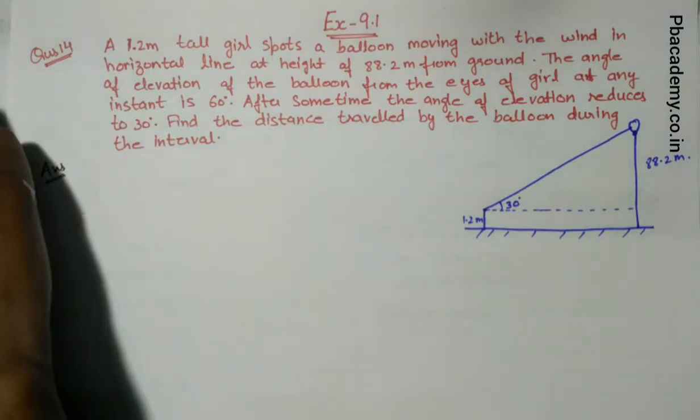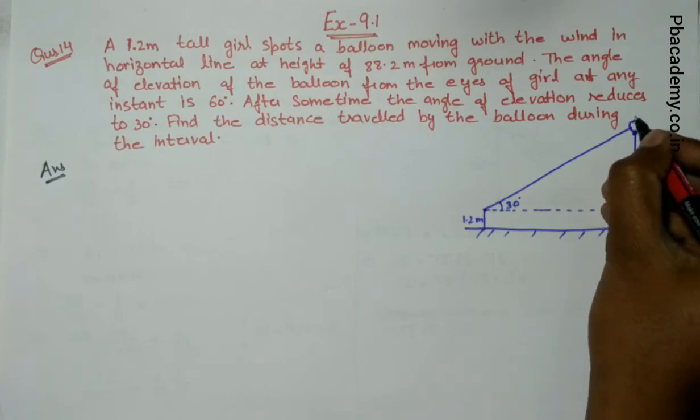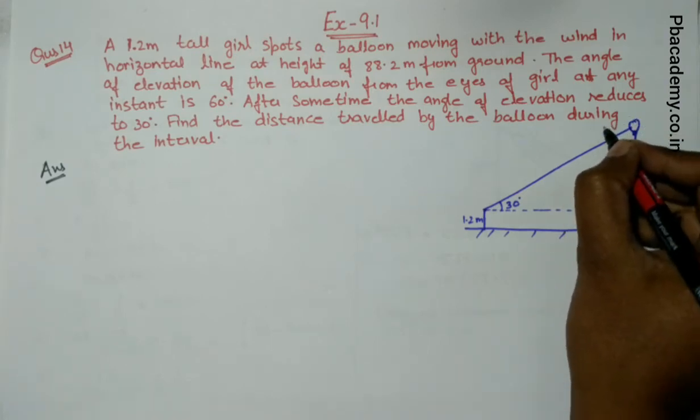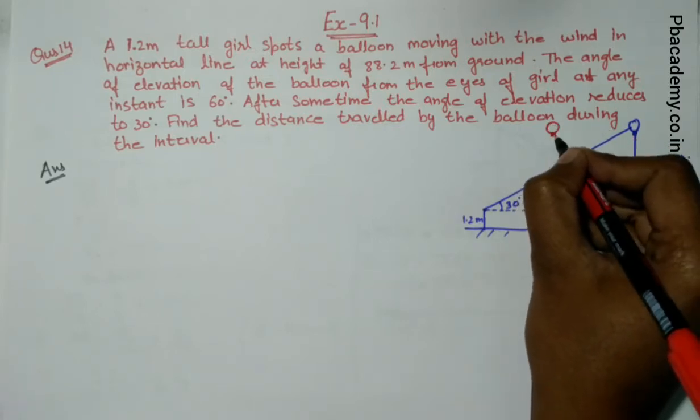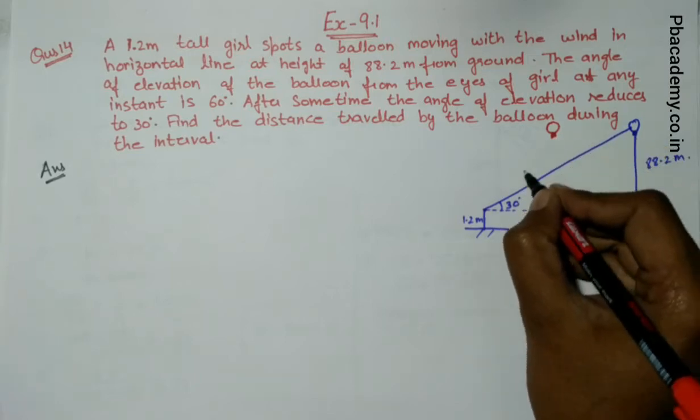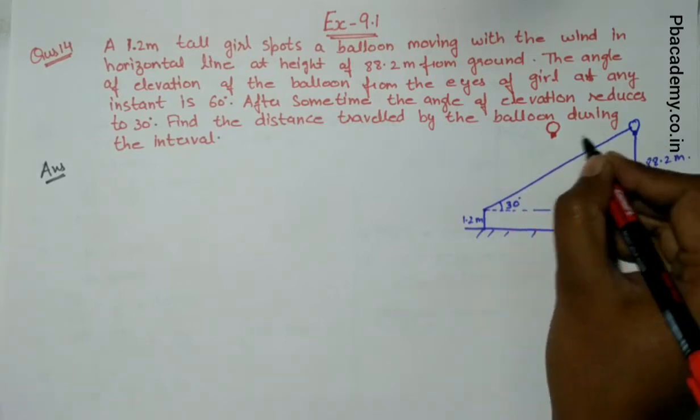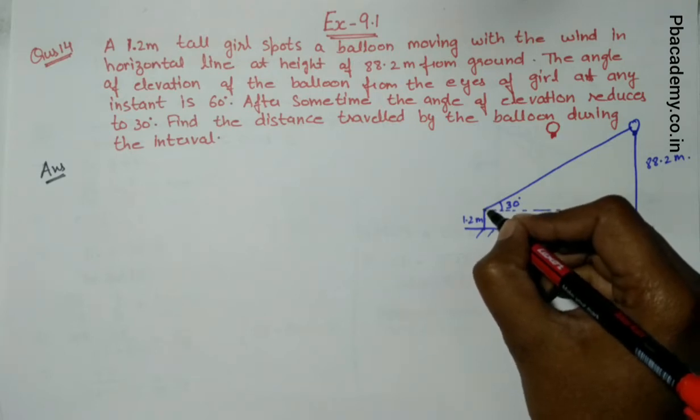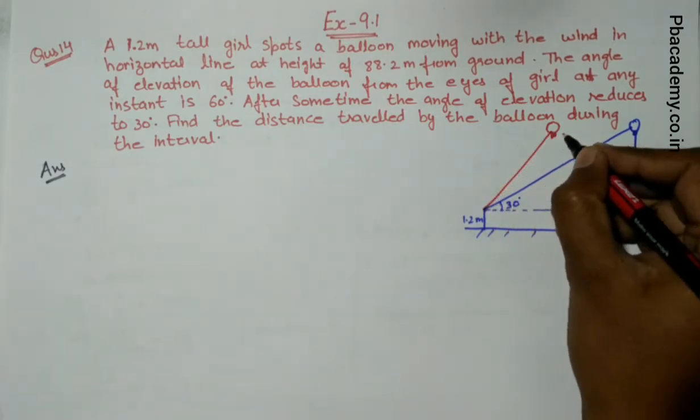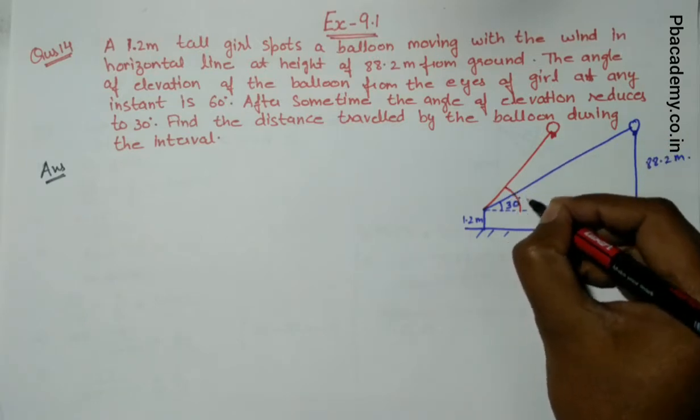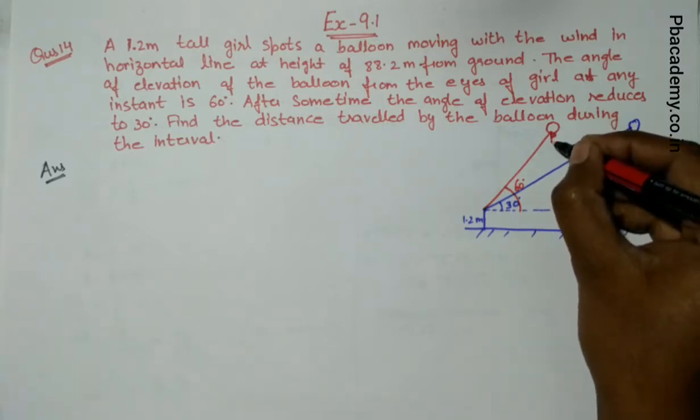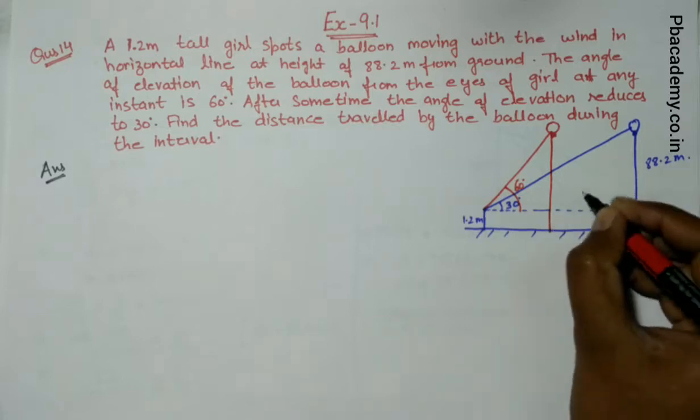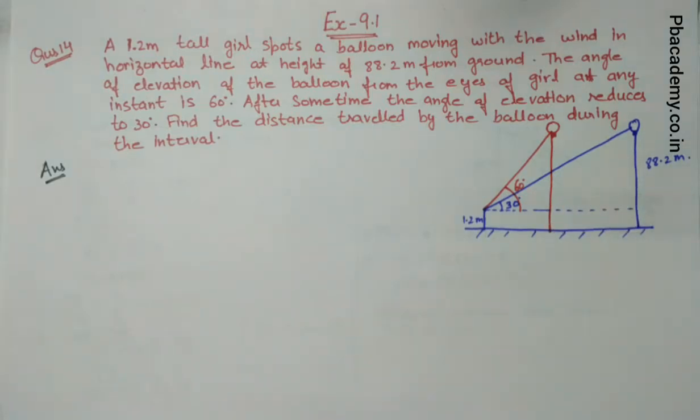After some time, the balloon due to air movement flies and reaches this position. After this interval of time, when the same girl from the same position looks at the balloon, the angle is 60 degrees at the same height of 88.2 meters.